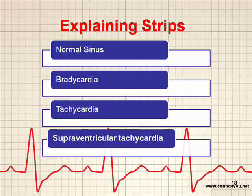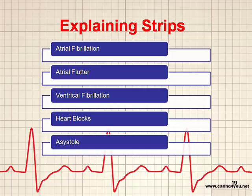I'm also going to discuss atrial fibrillation, atrial flutter, ventricular fibrillation, heart blocks, and asystole. These are the nine basic components that you will see on the NCLEX. We all know what asystole is — that's a flat line — but I'll still go over it for the sake of the NCLEX.